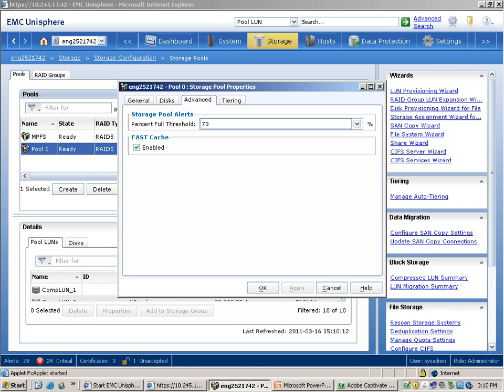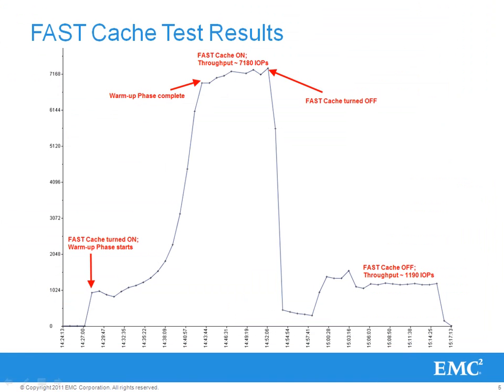Now let's get back to our presentation. This slide shows the throughput values that were seen during a fast cache test. This graph has been collected from Unisphere analyzer and shows the throughput values. Analyzer has other fast cache statistics available as well. In this case, we ran an iometer test on a 10GB LUN using an 8KB random workload.